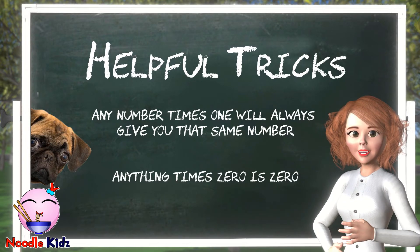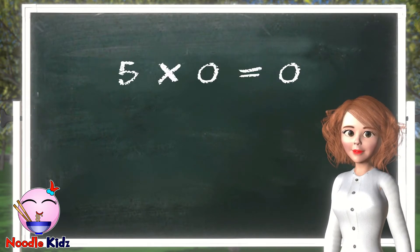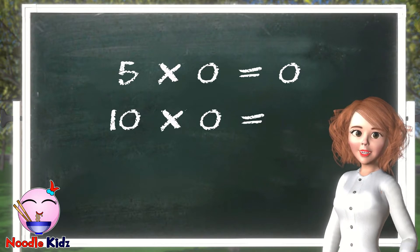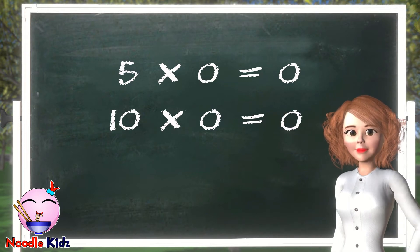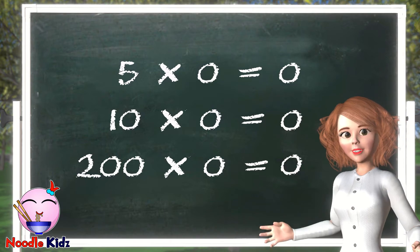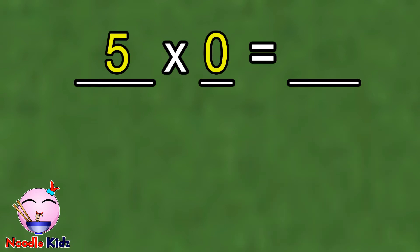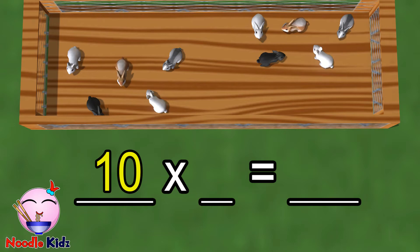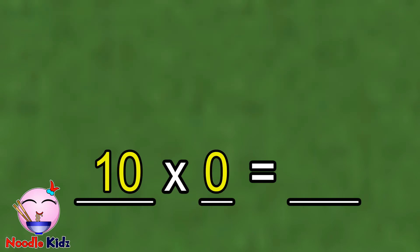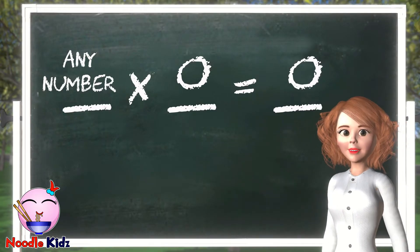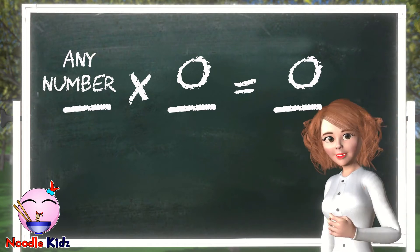Another multiplication trick is: anything times zero is zero. For example, five times zero equals zero. Ten times zero equals zero. Two hundred times zero? Yes — zero! Don't believe me? Let's go back to the farm. If one hutch has five bunnies but there are zero hutches — meaning no hutches — in the pen, how many bunnies are in the pen? None. It's zero. If one hutch has ten bunnies but there are zero hutches in the pen, how many bunnies are in the pen? Correct — none. Nada. Zero. It doesn't matter what numbers we have; when we multiply by zero, the answer will always be zero.